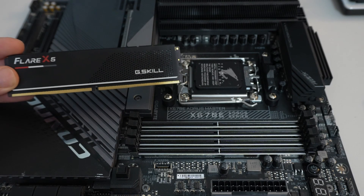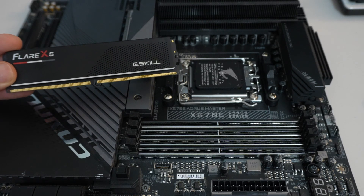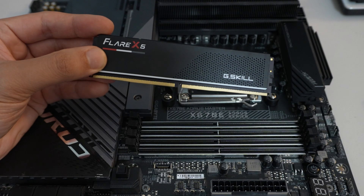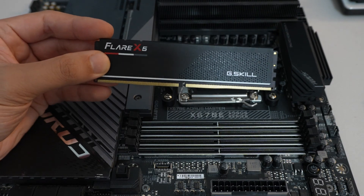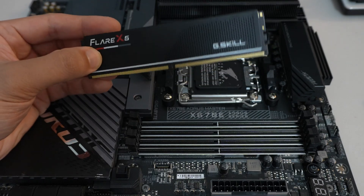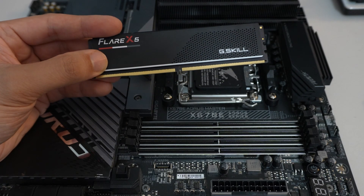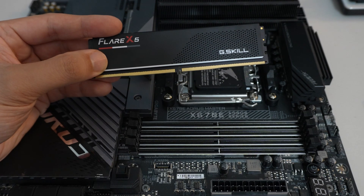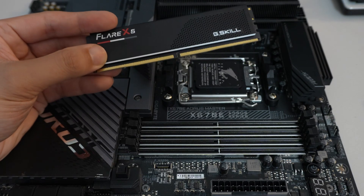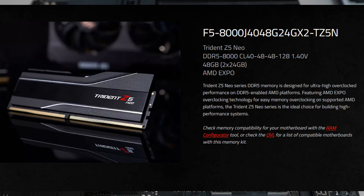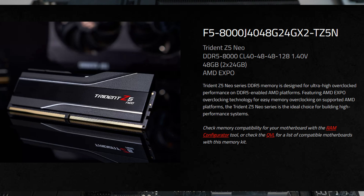For example, in DDR4, 3200 and 3600 are typically the upper bound limit in terms of rated speed you could find. With DDR5 there are significantly higher speeds — the starting speeds are typically anywhere from 4800 to 5600, and then the higher speeds are 6000 or greater.